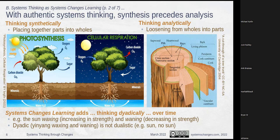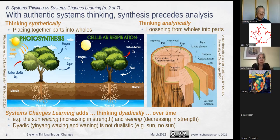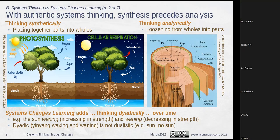What we add — and this is at the bottom of the chart — is that systems changes learning adds thinking dyadically over time, which comes a lot from Chinese philosophy. Looking at photosynthesis, the interesting part is that there's also something that happens over time, at nighttime, which is cellular respiration. There's photosynthesis during the day, but there's cellular respiration at night. We should look over time, not just at one point. We have what's called a processual philosophy, which means we are really looking at changes over time.